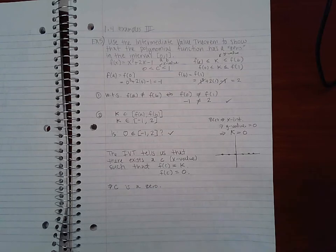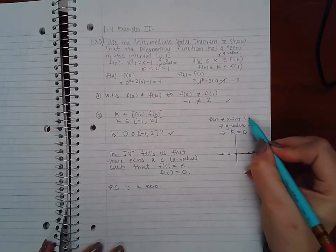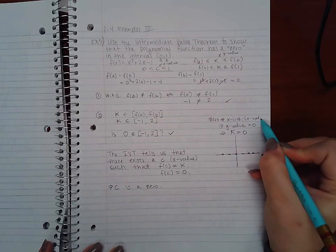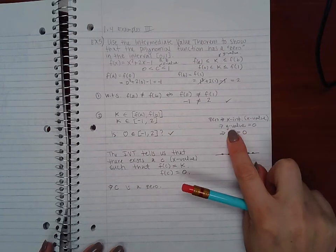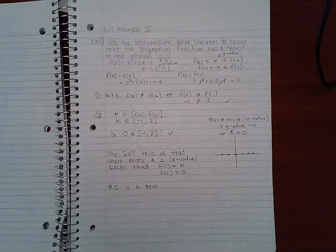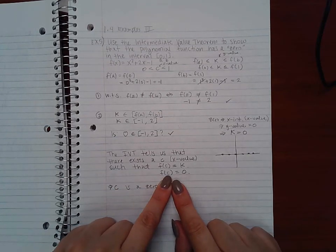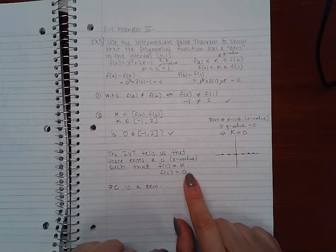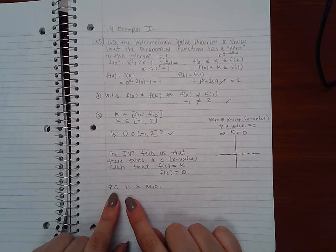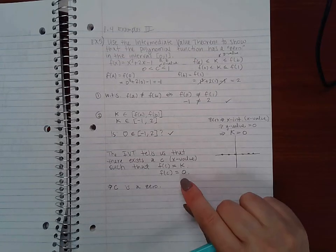Remember we call the x values zeros because they give us y value 0. So your zero is the x-intercept, which is an x value, but how do you find it? You find when the y value is equal to 0, and that's what gives you that x value.